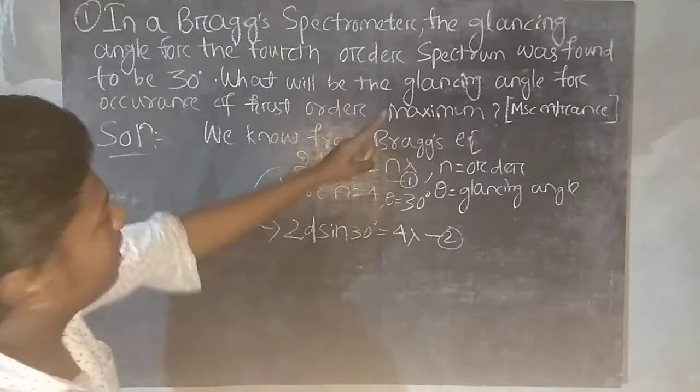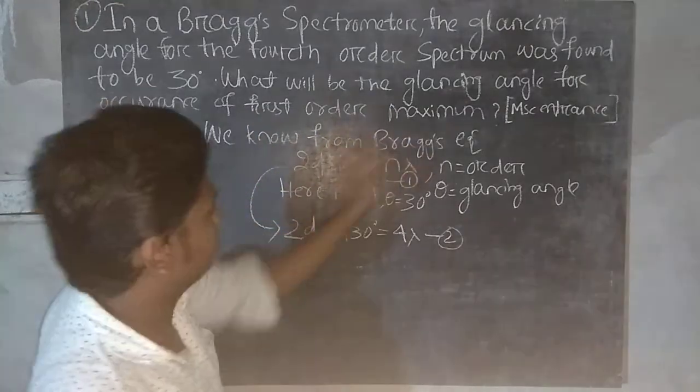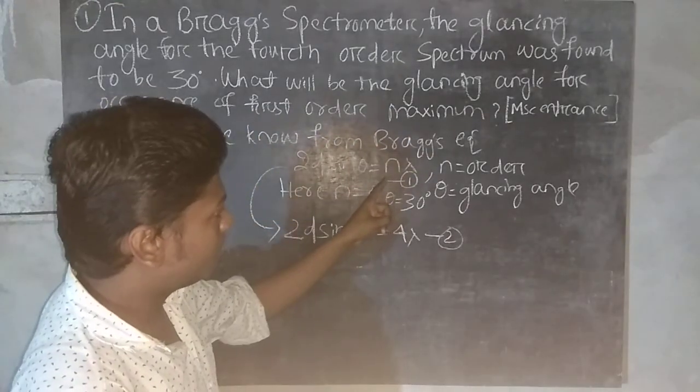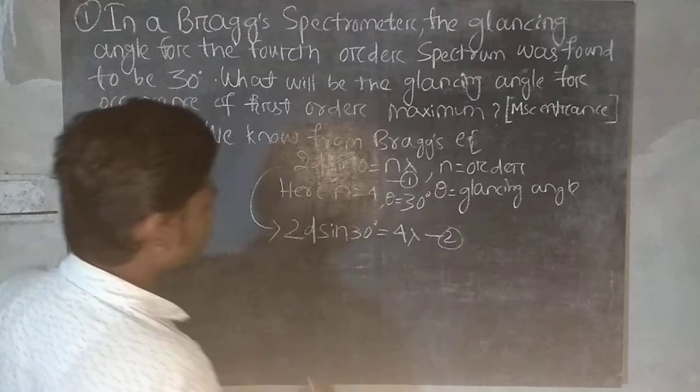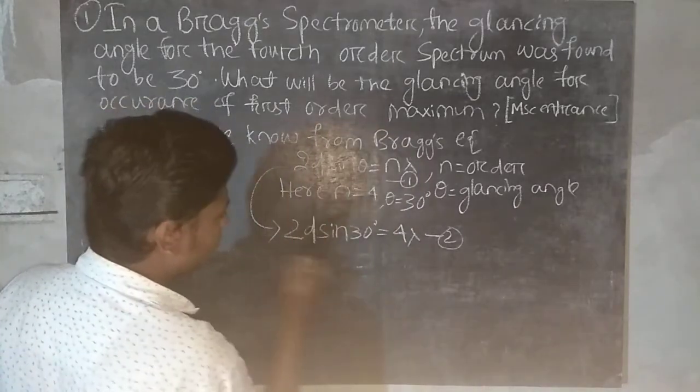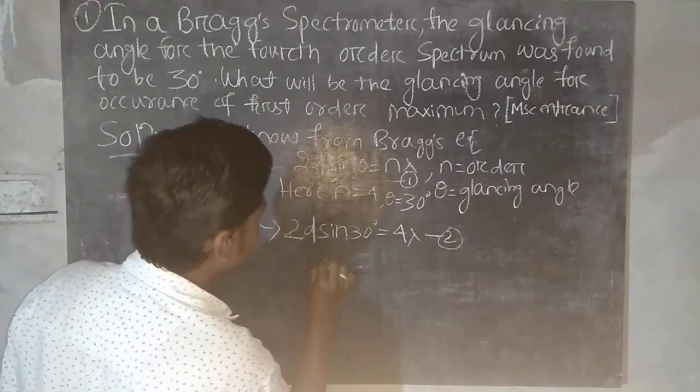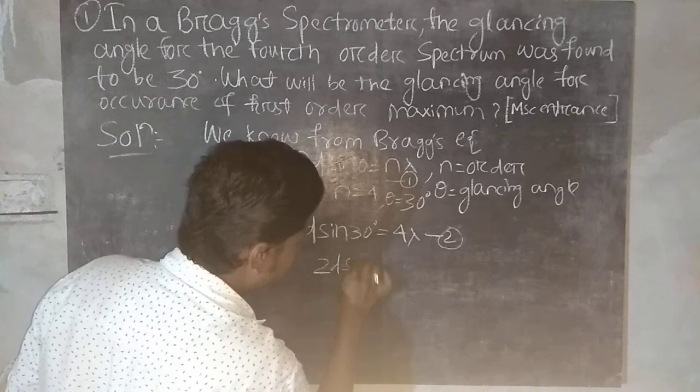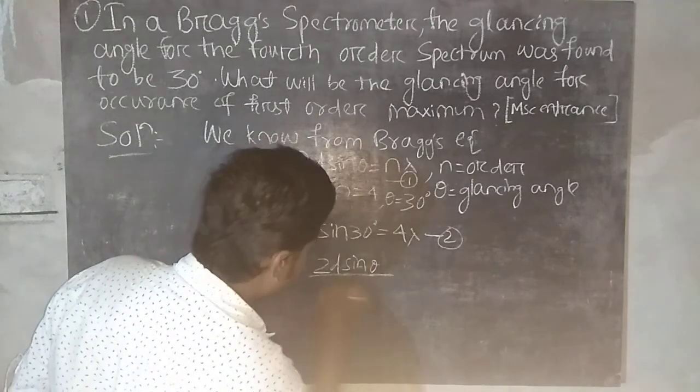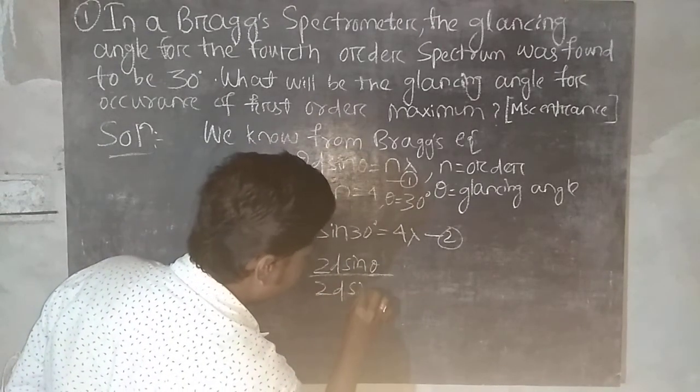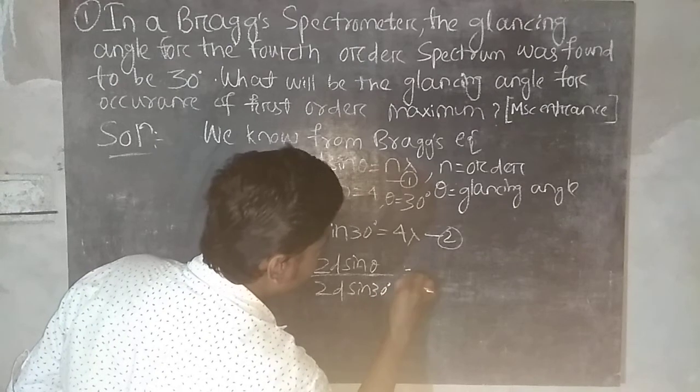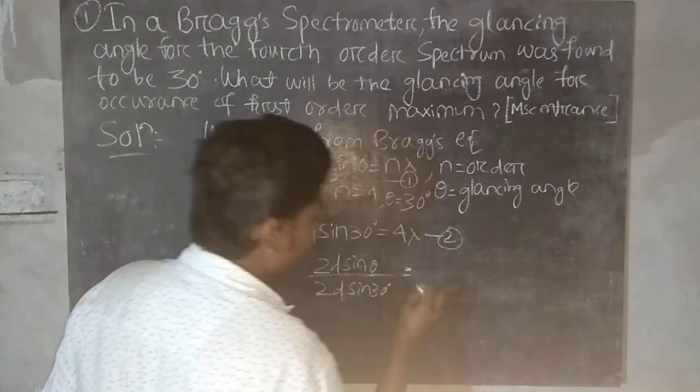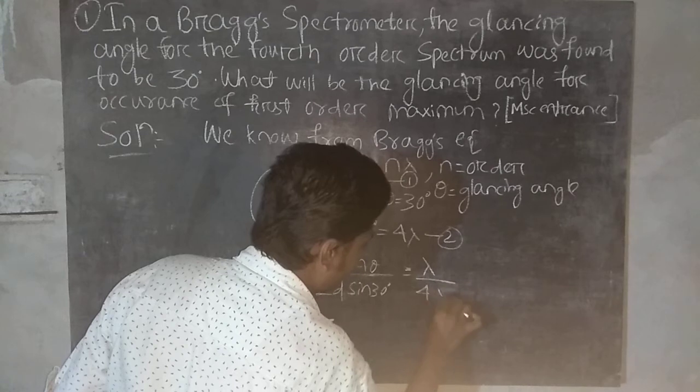So what will be the glancing angle for occurrence of first order maximum? So here we have to put this as 1. We divide both equations to get 2d sin theta upon 2d sin 30 equals lambda upon 4 lambda.